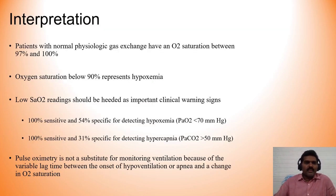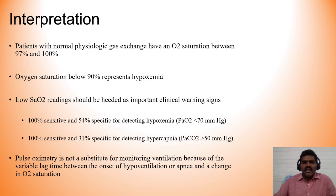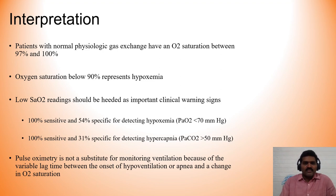To interpret pulse oximetry readings: patients with normal physiologic gas exchange have oxygen saturation between 97–100%. Oxygen saturation below 90% represents hypoxemia, and low SpO2 readings should be treated as important clinical warning signs. Pulse oximetry is 100% sensitive and 54% specific for detecting hypoxemia (PO2 < 70 mmHg), and 100% sensitive but only 30% specific for detecting hypercapnia (PCO2 > 50 mmHg). Pulse oximetry is not a substitute for monitoring ventilation due to variable lag time between onset of hypoventilation or apnea and the change in SpO2; arterial blood gases are needed for accurate PaO2 readings.